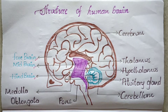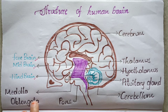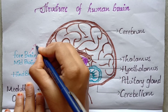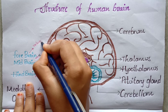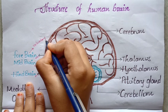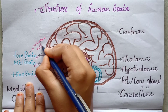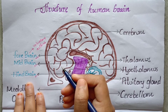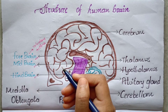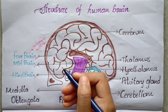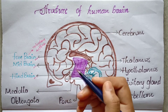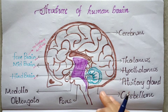Forebrain performs the voluntary actions — mental abilities, thinking, memory or emotions, speech or language, and sensations like cold, heat, pain, and pressure. These voluntary actions are performed by the forebrain.